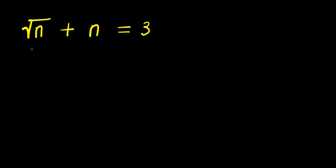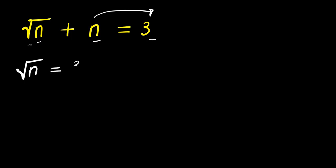Hello, how do you solve this radical problem? This is square root of n plus n equals 3. We are going to start by moving this n across the equality sign. n becomes negative n, so I have square root of n equals 3 minus n.